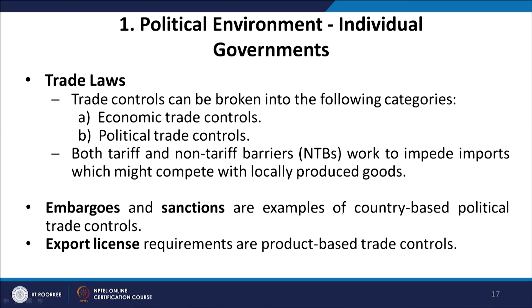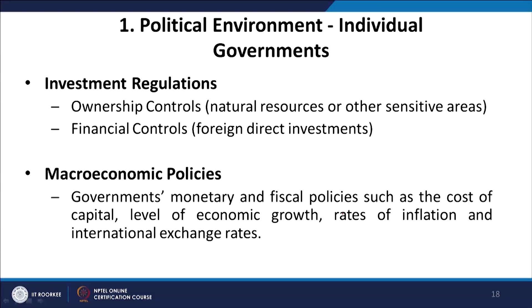Governments have various other tools — for example, embargoes and sanctions, which are used as political trade controls. There are also export license requirements, which are product-based trade controls. Then there are investment regulations: how much can a foreign company own in the host country — called ownership control — including ownership control of natural resources or other sensitive areas. Another kind of investment regulation is financial control, that is, how much foreign direct investment can be made.